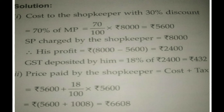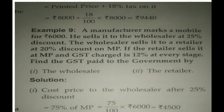Price paid by the shopkeeper = cost plus tax = Rs. 5600 plus 18% of Rs. 5600 = Rs. 5600 plus Rs. 1008 = Rs. 6608. Cost to the customer = printer price plus 18% tax = Rs. 8000 plus 18% of Rs. 8000 = Rs. 9,440.